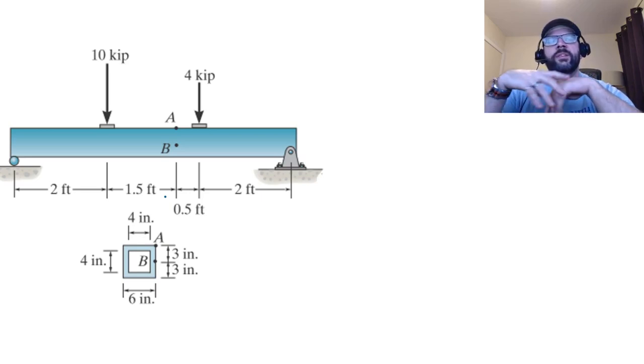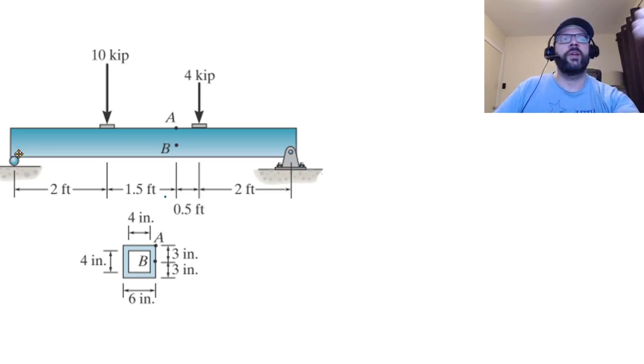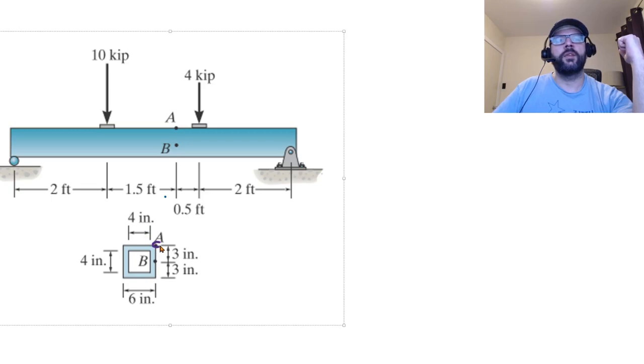And then we want to analyze what's happening for the stress at these points A and B. So they're both located at three and a half feet along the beam. One of them's located in the top corner here, and one of them's located in the center on the side there.